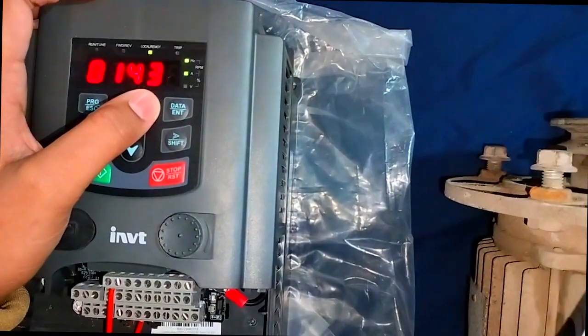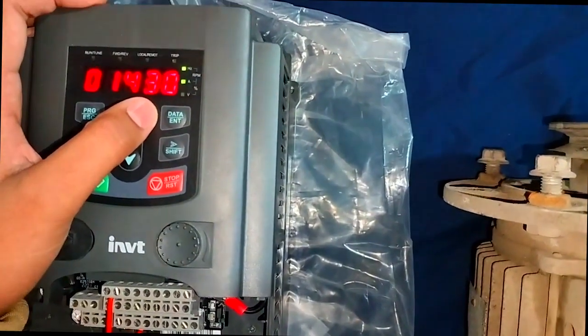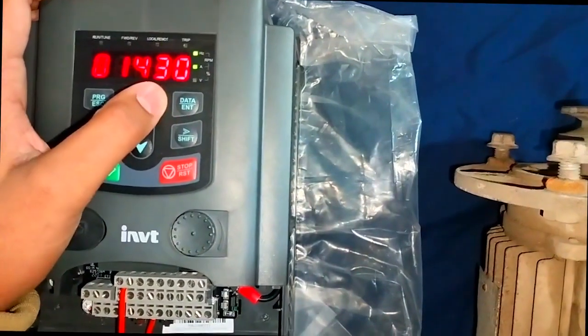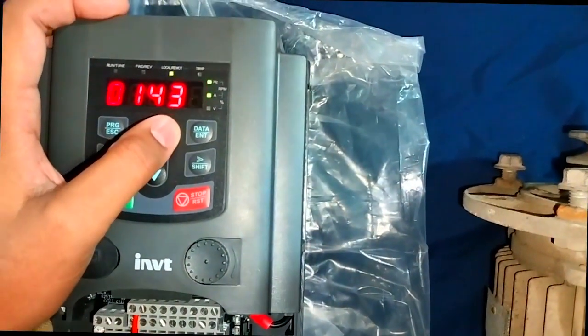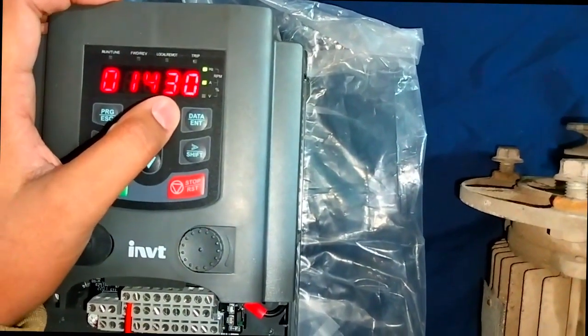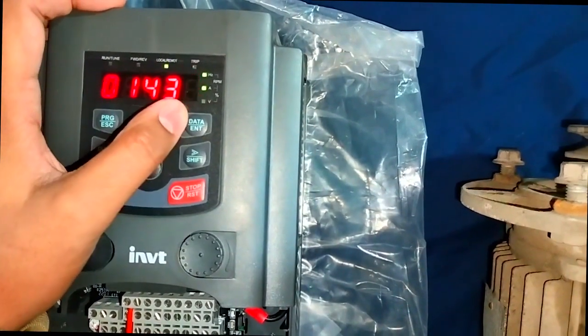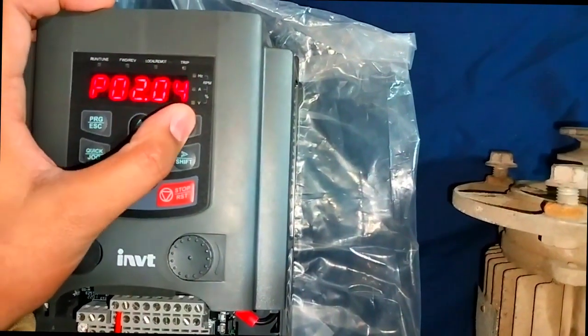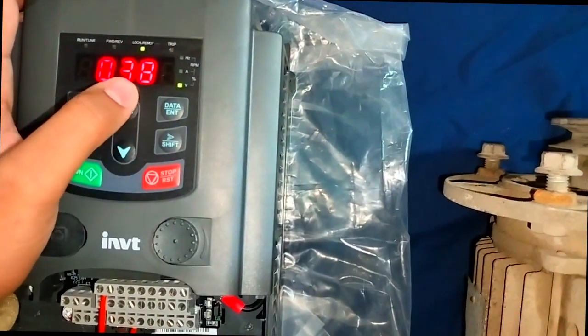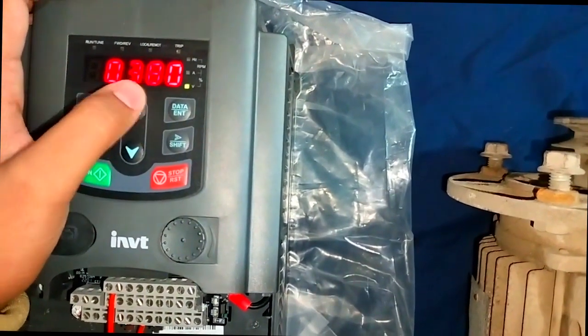This is 1430. We have to add according to the motor. Different motor speeds like 950 and 1400 are available. We have to add the nameplate RPM.